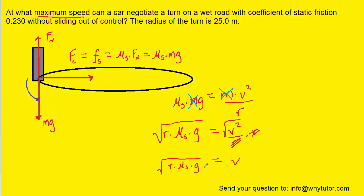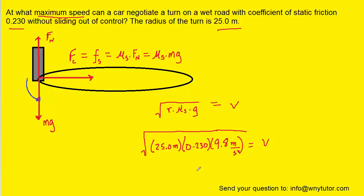Now that we've isolated the speed we can go ahead and plug in the known value for the radius which is 25 meters. The coefficient of static friction is 0.23 and then gravity of course is 9.8 meters per second squared. And after plugging in and simplifying we can see that the maximum speed is approximately 7.51 meters per second and so this would be the correct answer to the question.